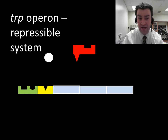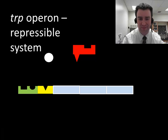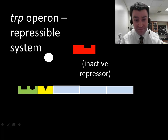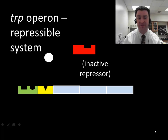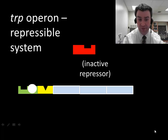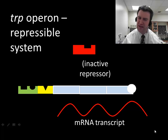By default, the repressor is off the operator region. The repressor is off because its active shape is currently inactive — effectively it's the inactive form of the repressor protein, and if its active shape is not present then it can't bind to the operator region. So RNA polymerase is able to come into the region, bind at the promoter, transcribe the gene, and create mRNAs that are then translated into proteins. By default, we want this expression to be on because we need a pretty constant supply of these enzymes.